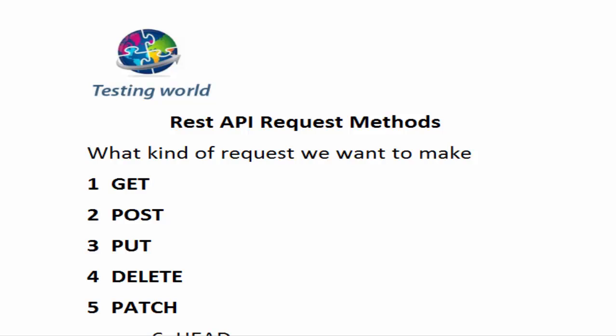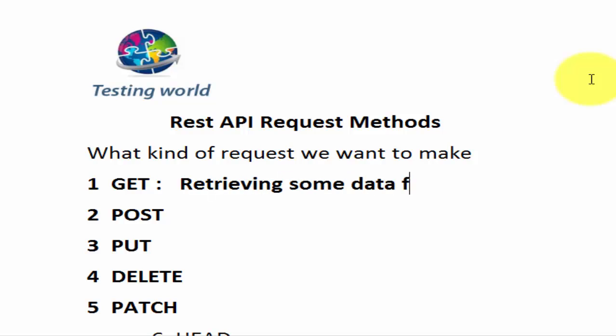I am going to explain each and every method — in which case what method we need to use. First is the GET method. A request with the GET method is used only when we want to fetch some data from the server. Like we have an application in which we can search some data — whenever we want to fetch or retrieve data from the server, we are going to use the GET request.